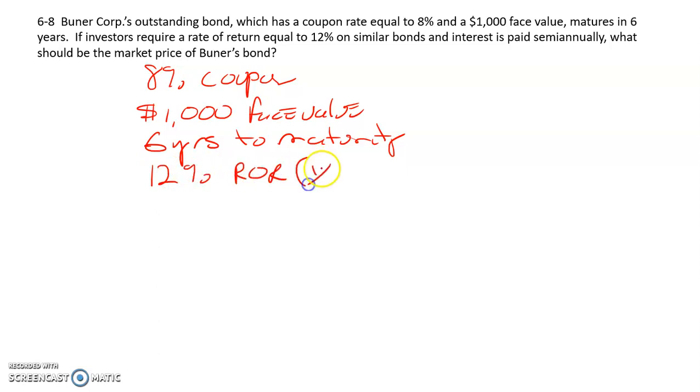Again, same as yield to maturity, and we have semi-annual payments. So our N is 6 years times 2, that's 12. The I/Y is the yield to maturity divided by 2, 12 divided by 2 equals 6.